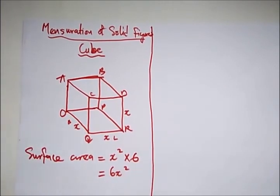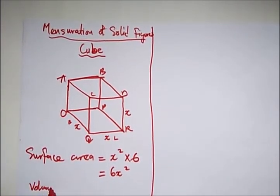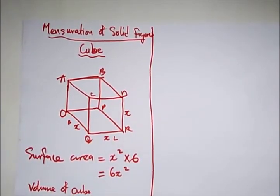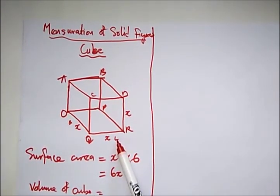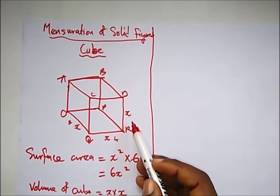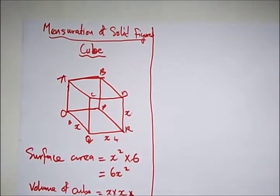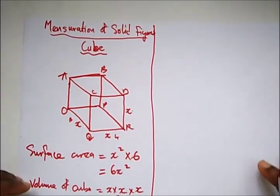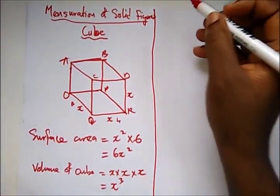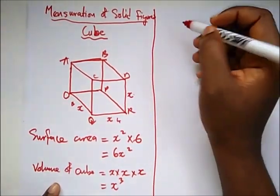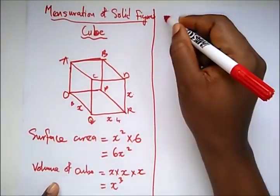Okay, now what's our volume? Remember, volume of our cube - remember volume is the base area times the height. And what is our base area, which is what? Length times breadth, right? That's x times x. And what is our height? Is also x. So times x. So the volume of a cube is just simply x³.